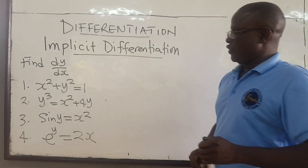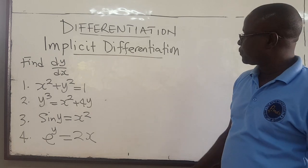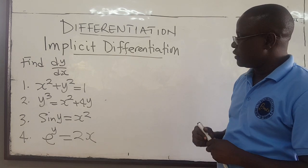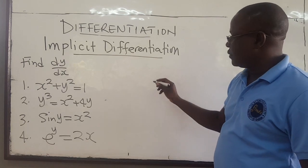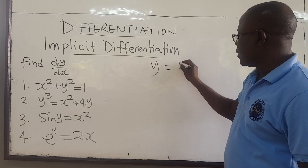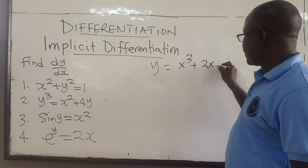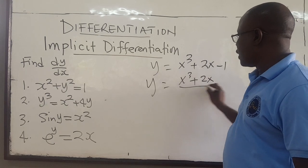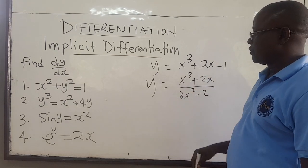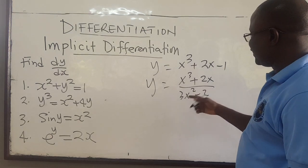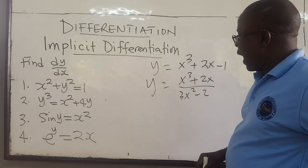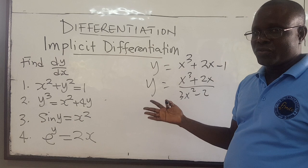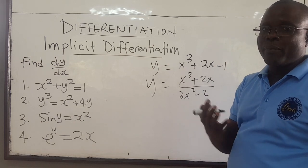Welcome once again. Here we want to start looking at implicit differentiation. So far, what we've looked at, we've always had y being isolated — things like y equals x cubed plus 2x minus 1, or y equals x cubed plus 2x all over 3x squared minus 2. We've always been able to isolate y. Now the question is: what happens if you have expressions where y cannot be isolated, or even if you can isolate it, you end up getting a very complex expression?